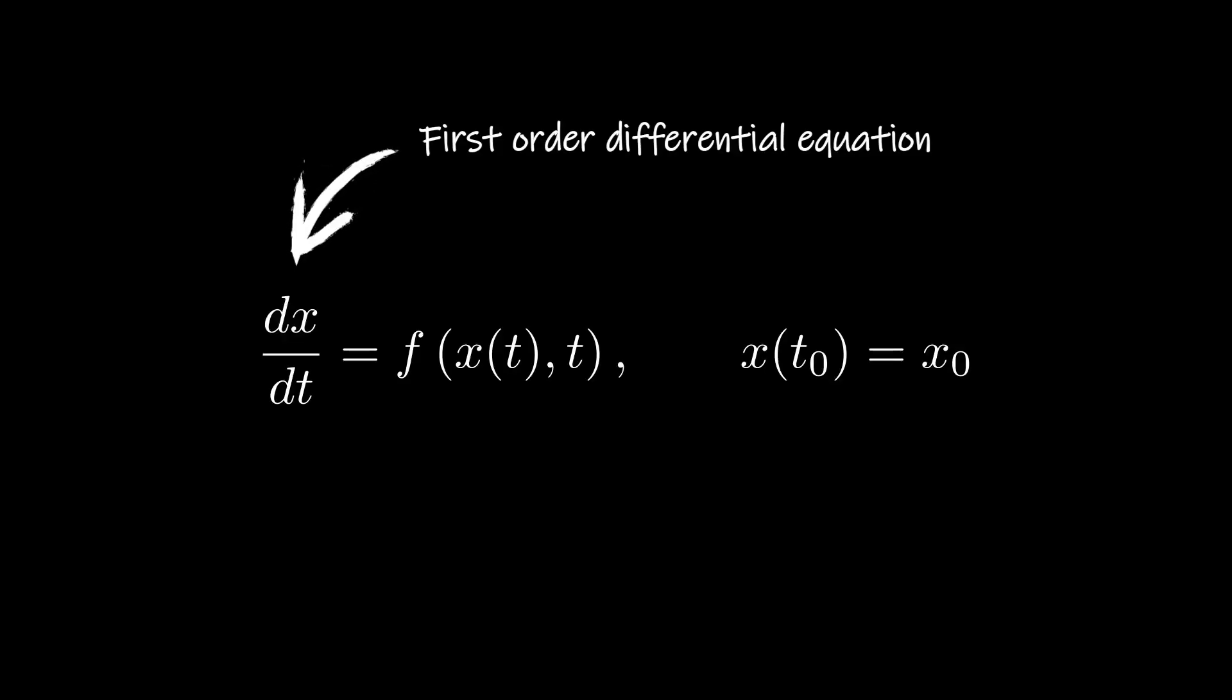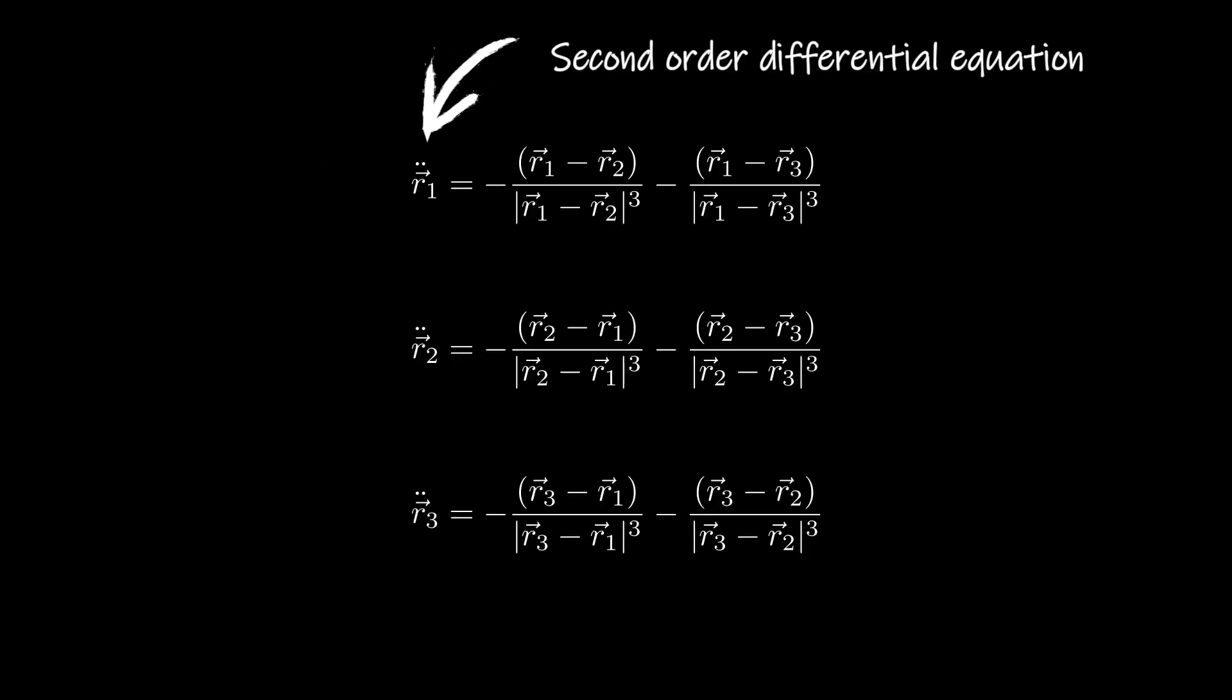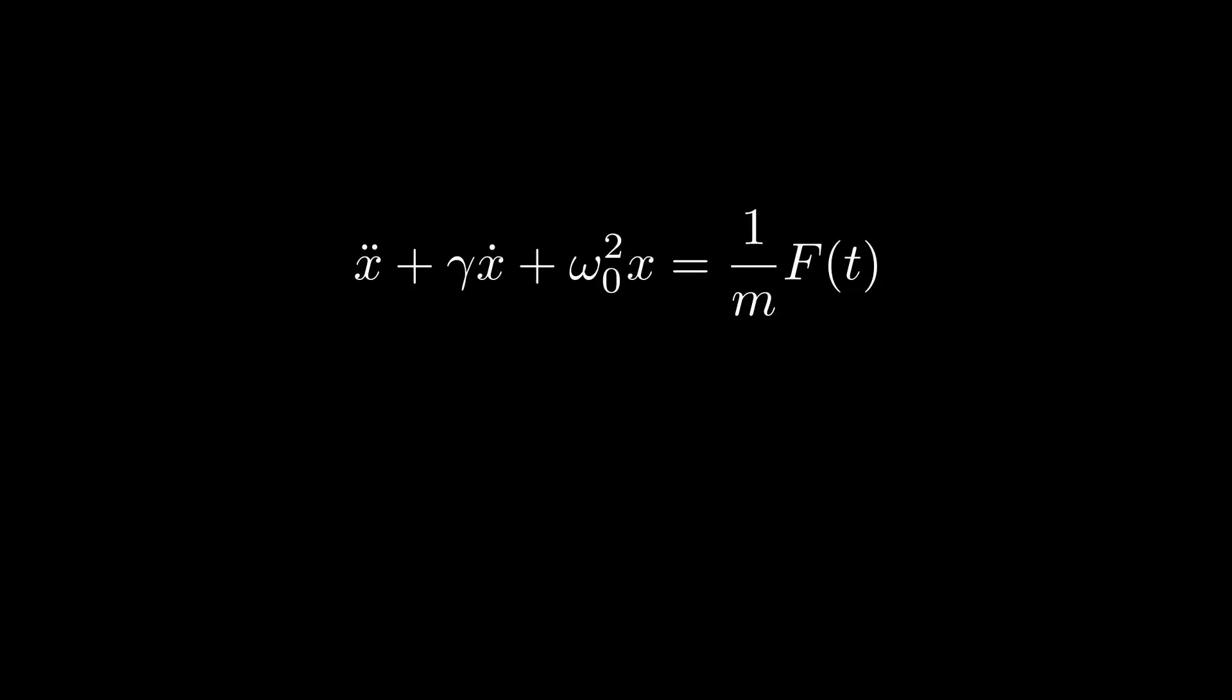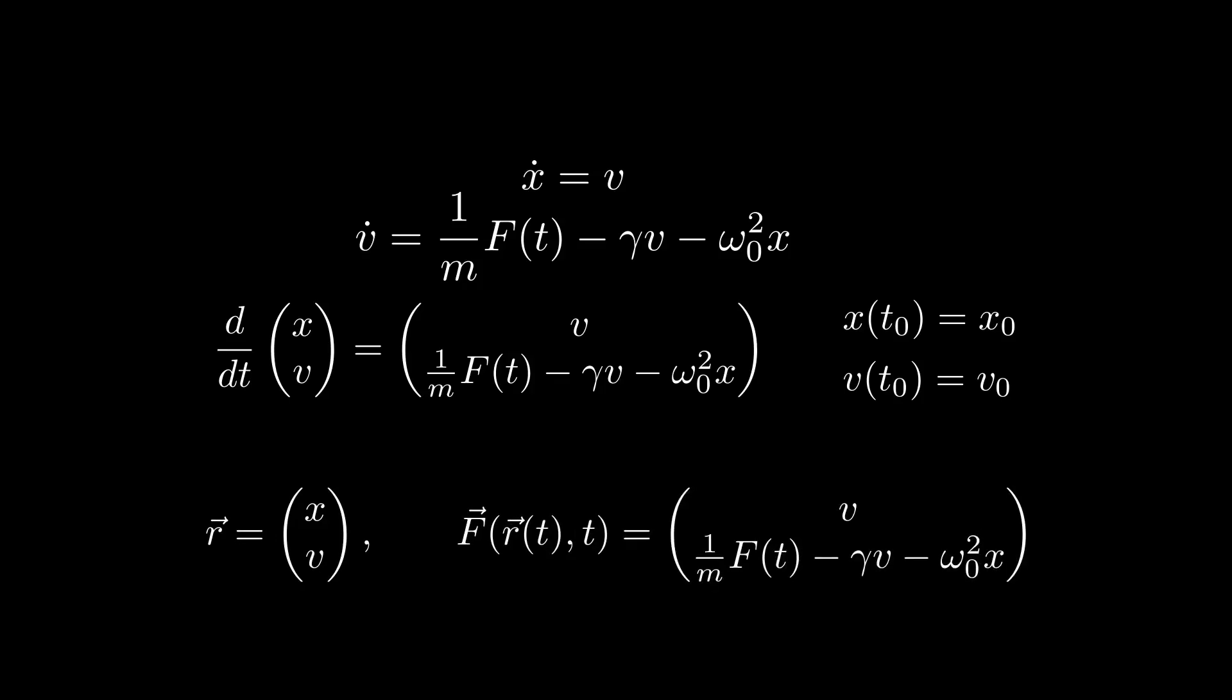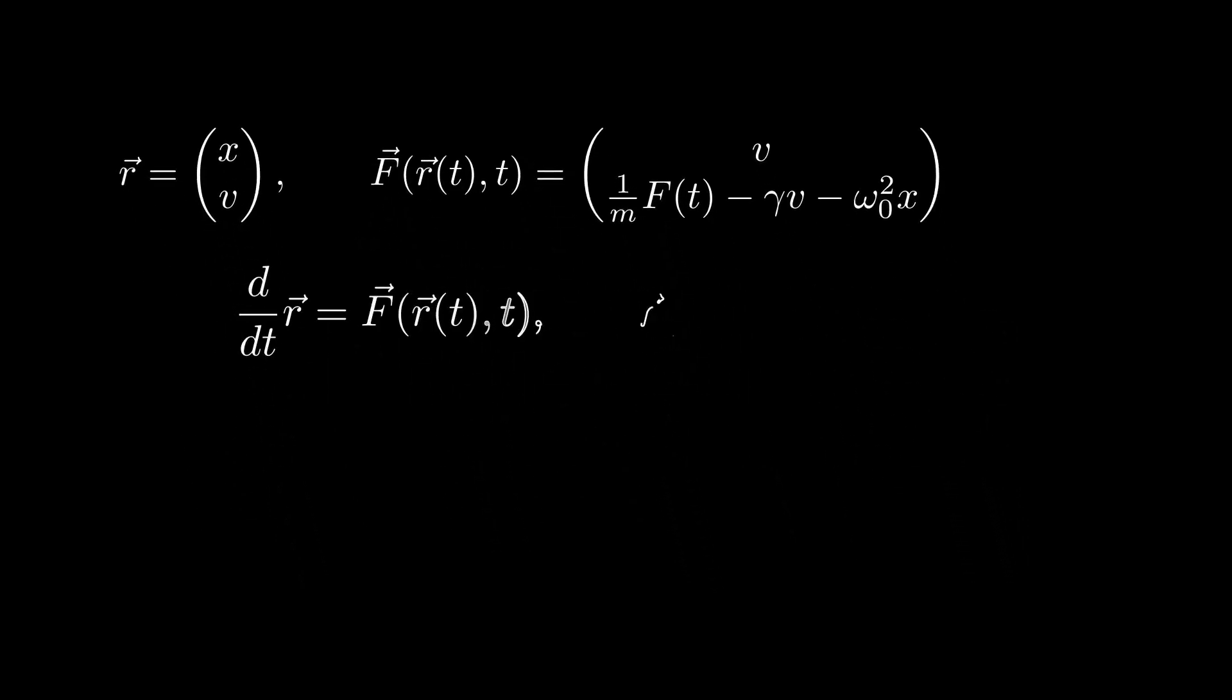Now, some of you might have noticed that this method applies to first-order differential equations. Whereas in our three-body problem, we are dealing with second-order differential equations. However, this isn't a problem because the method can be easily adapted to handle second-order equations as well. For example, consider the equation for a driven harmonic oscillator. If we make a substitution by setting the first time derivative of position equal to velocity, we can transform the single second-order differential equation into a system of two first-order differential equations. And using this vector notation, we can write the system of equations in a very simple and compact form. And now we simply apply the Euler method, or any other numerical method at each step to both of the coupled equations simultaneously.